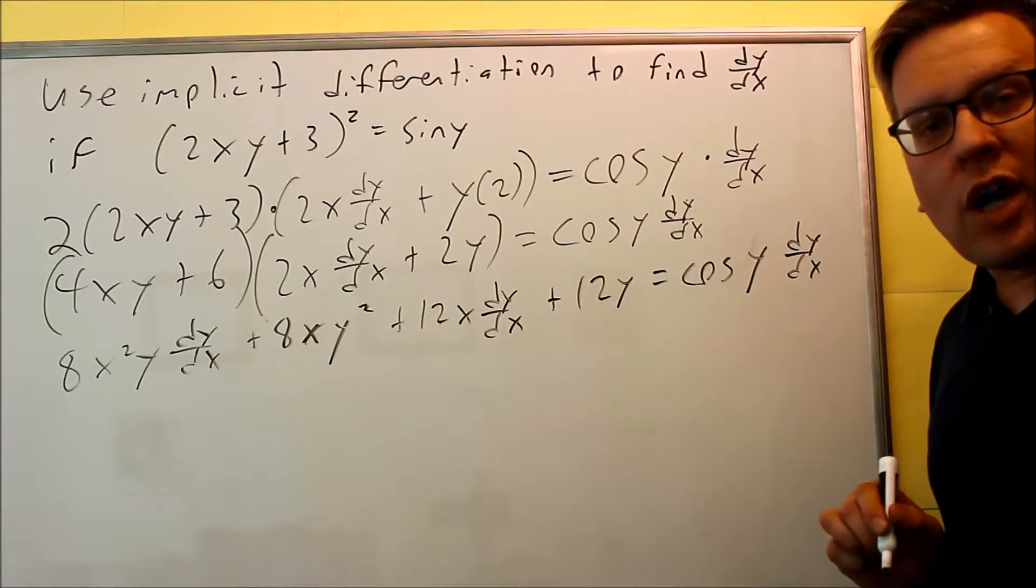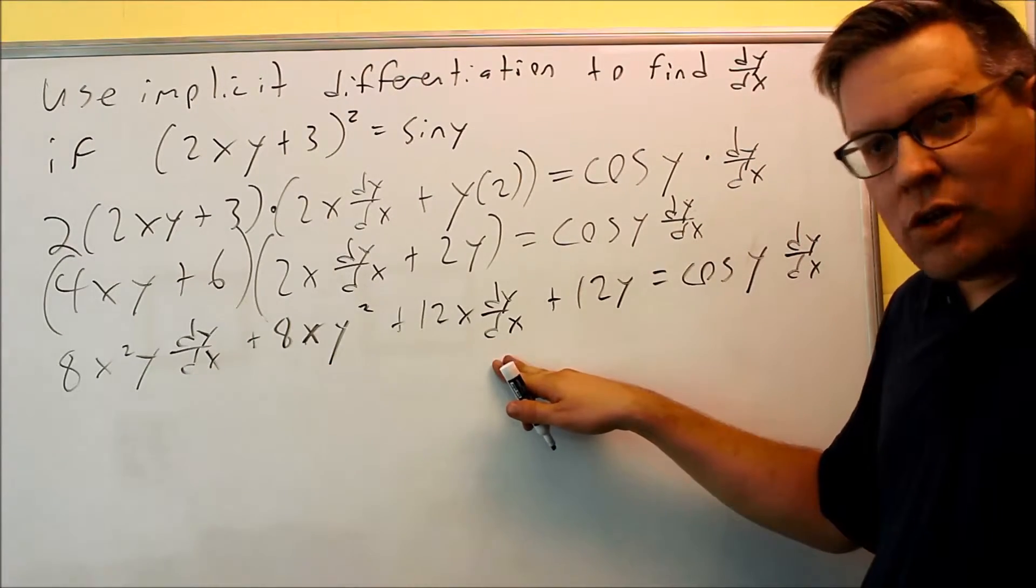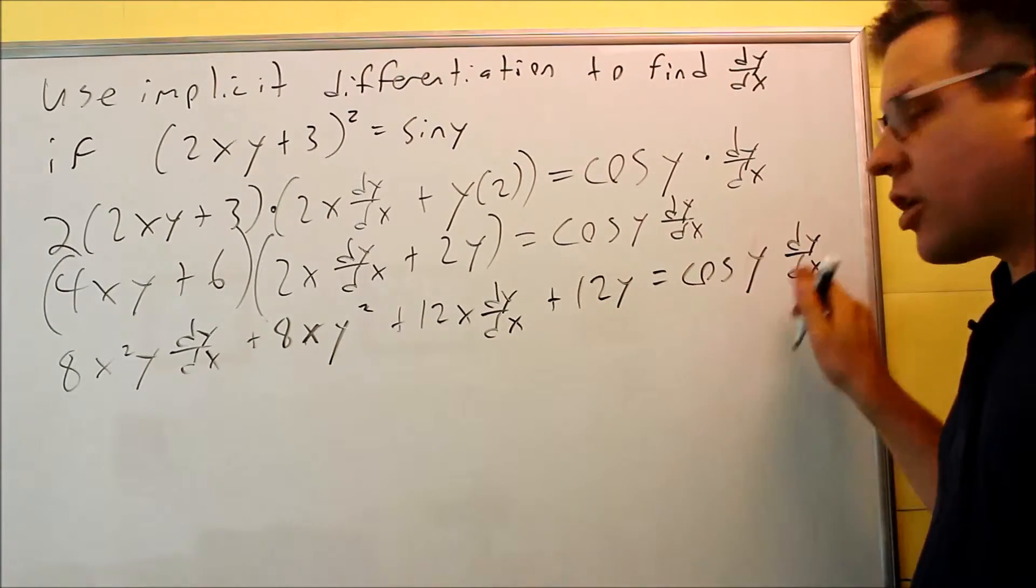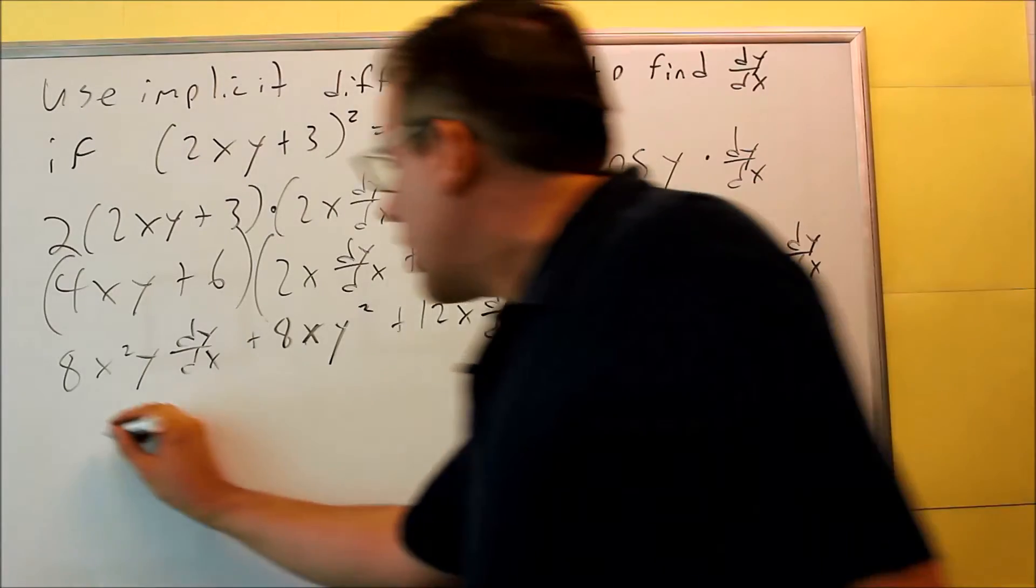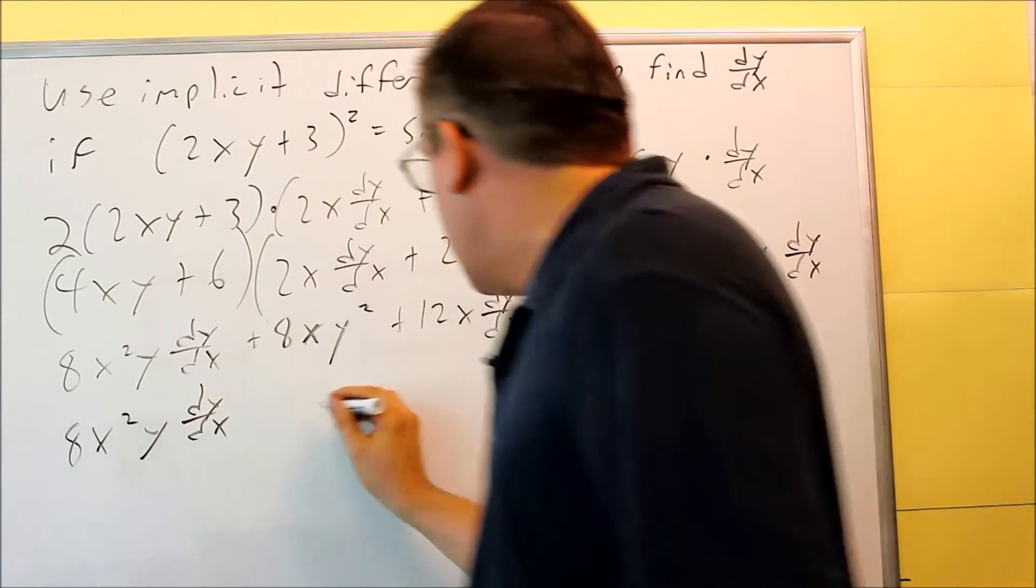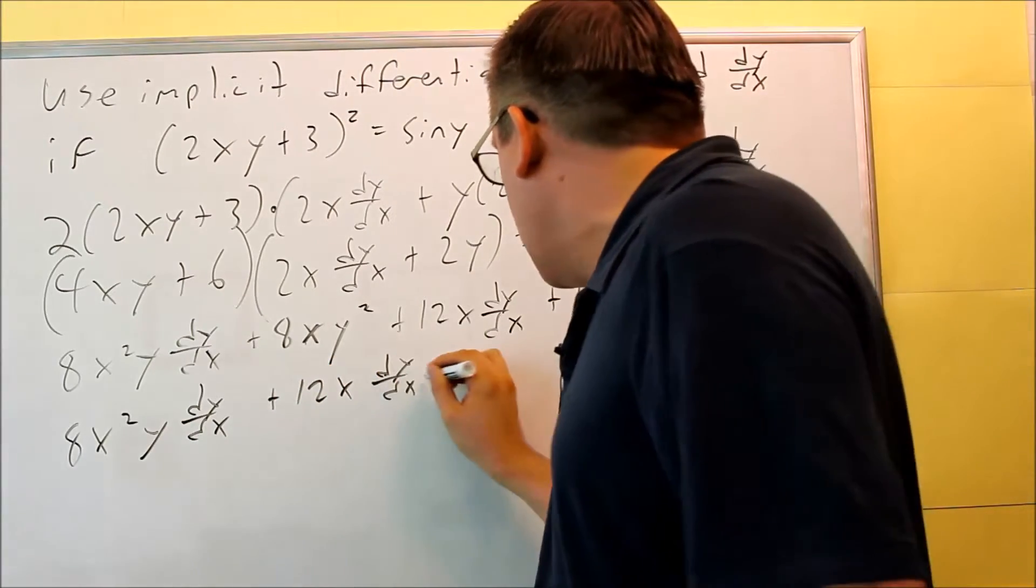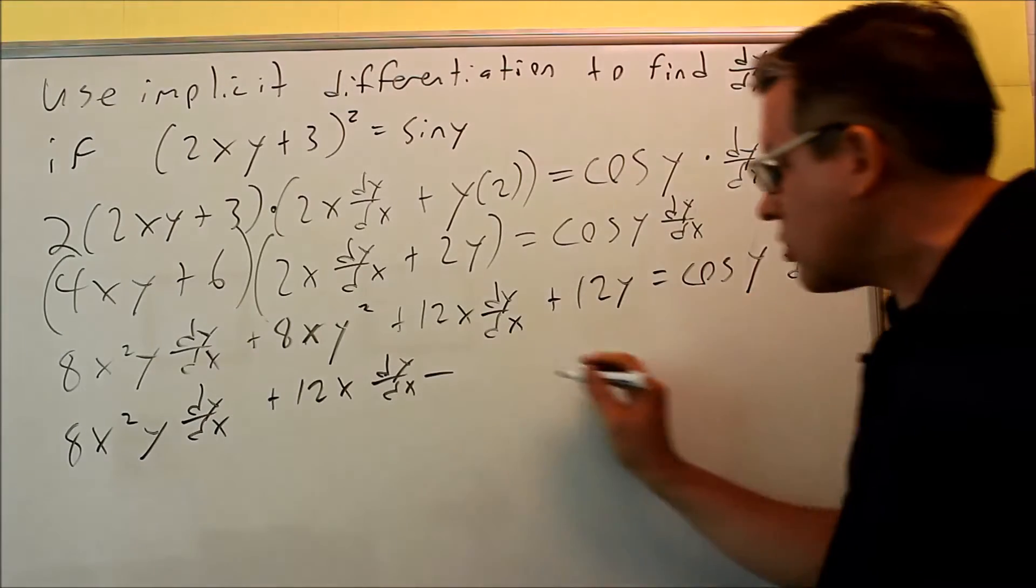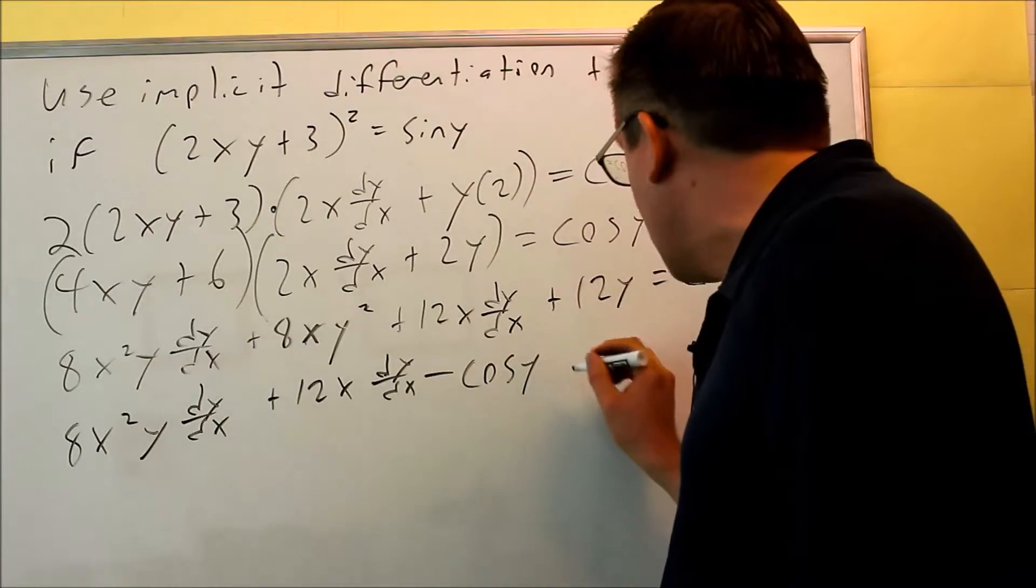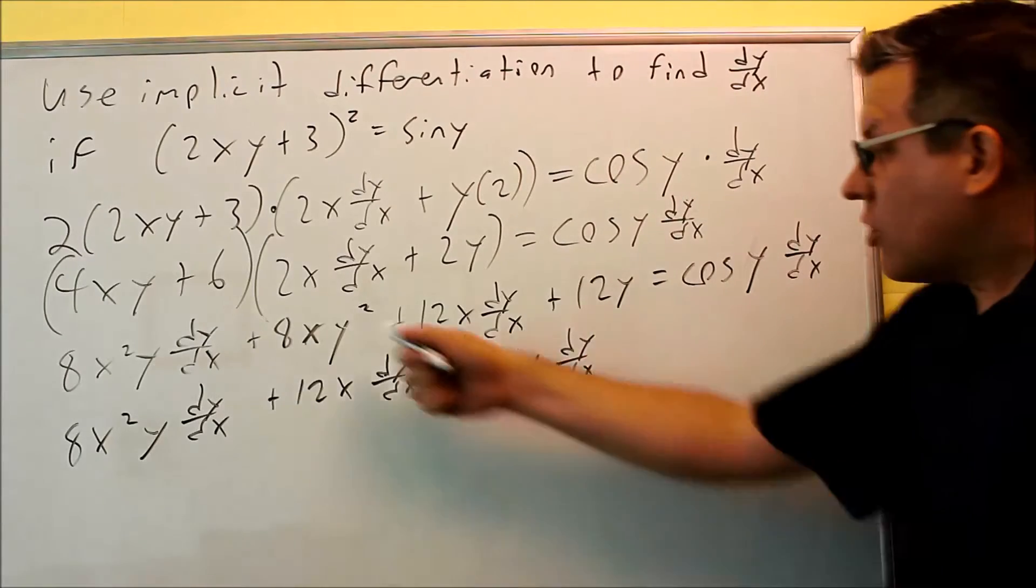We want to get all the dy/dx's on one side. We already have two of them here, this one and this one, so we can keep those together on one side. We're going to divide it, and we're going to move the cosine over. So I have 8x²y dy/dx, and I have the 12x dy/dx, and I'm going to bring across the equal sign the cosine. So if I bring it across, it becomes negative, and the cosine y dy/dx.